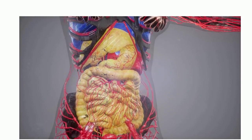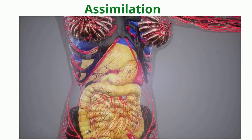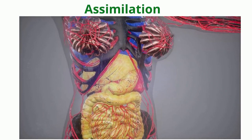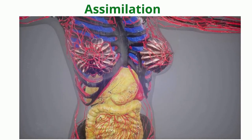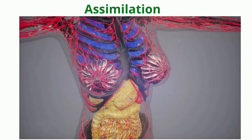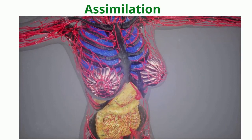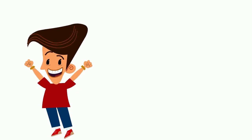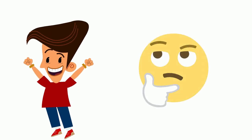Once absorption is done, the next step is assimilation. The process of using the digested food is called assimilation. The digested food is carried to all parts of the body through blood, and our body cells use the digested food to obtain energy for growth and repair of the body. The digested food is utilized by the body, but what happens to the undigested food?